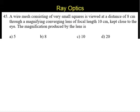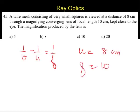This is the problem of a lens, so we can use the lens formula for calculating V here. 1 by V minus 1 by U is equal to 1 by F. This is the formula applicable for a lens.